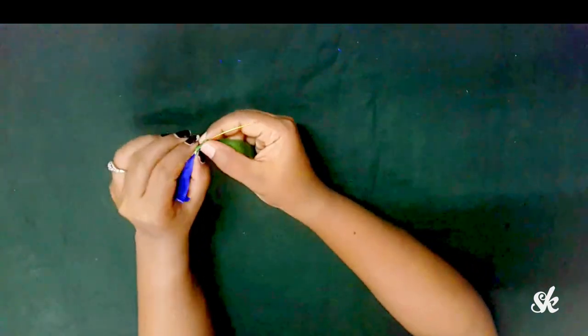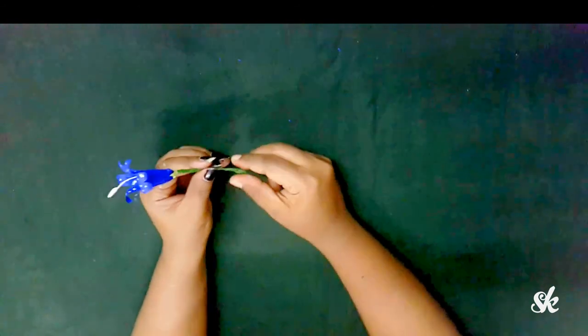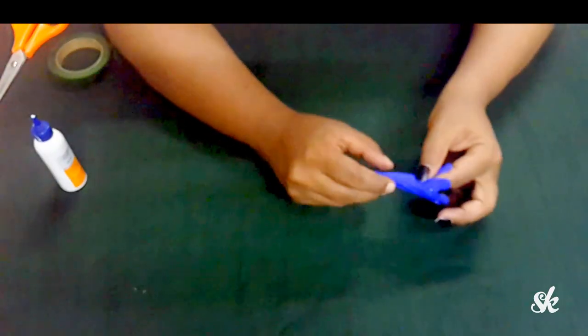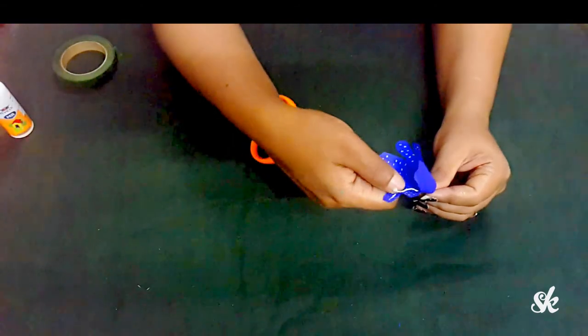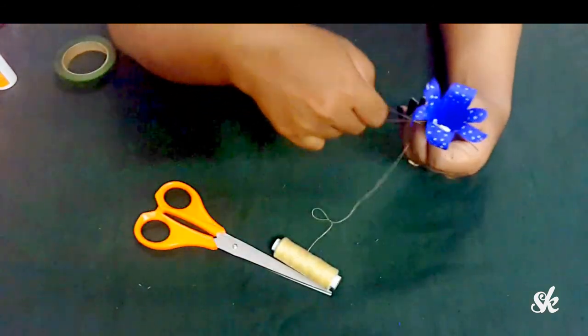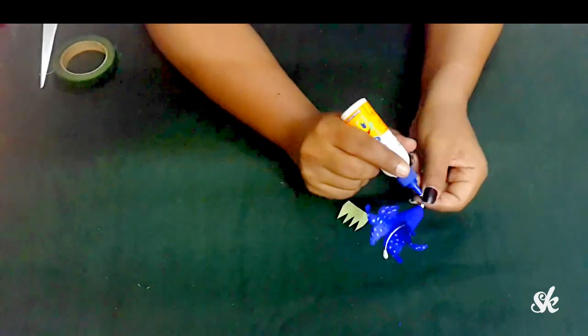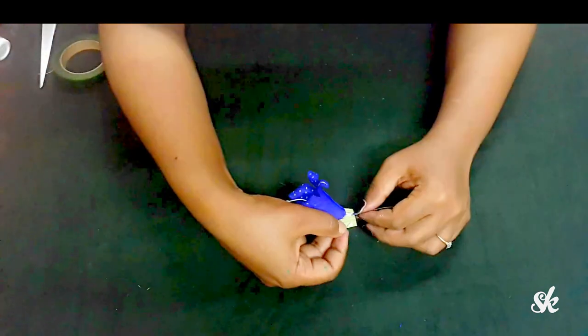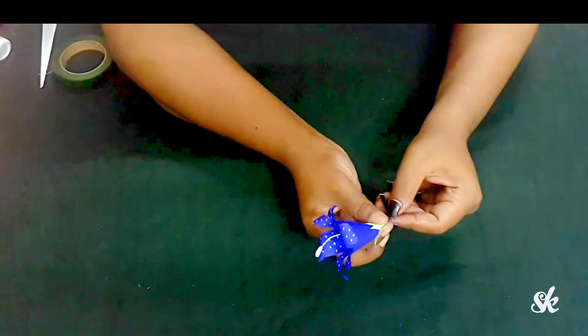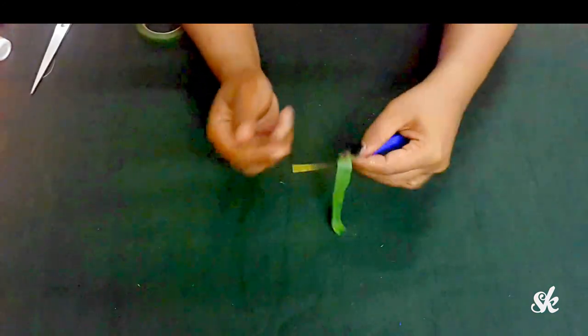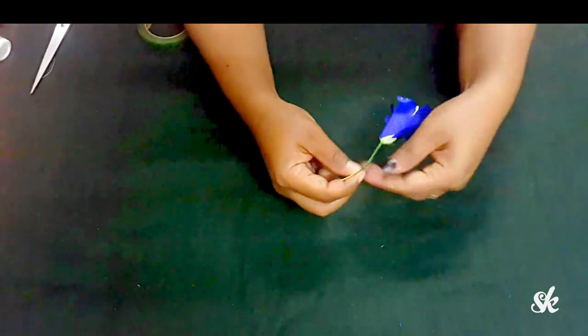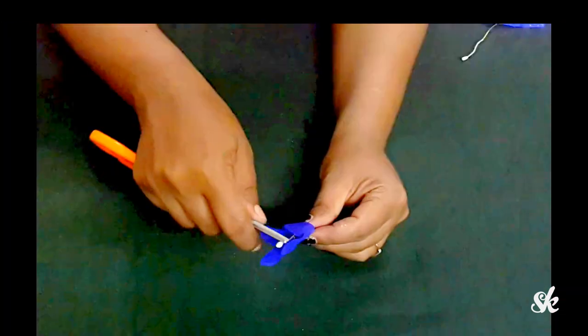Let us brush up the entire flower making steps once more: making the bluebell, inserting the stigma, curling up the petals, sticking the sepals, and ending up with the flower stem. I hope you understood thoroughly, right?